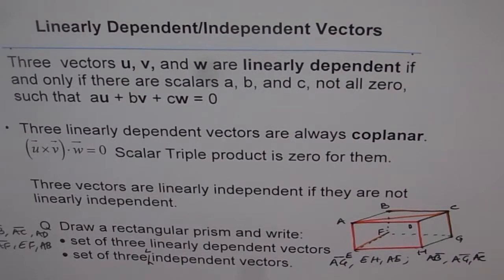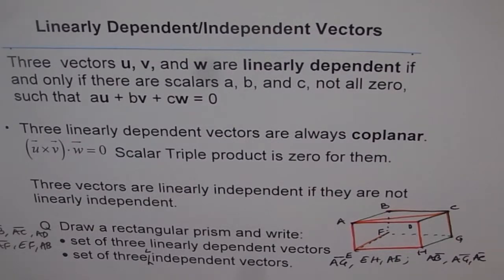So that gives you a good idea about what linearly independent and linearly dependent vectors are when we are considering three vectors at the same time. Thank you.